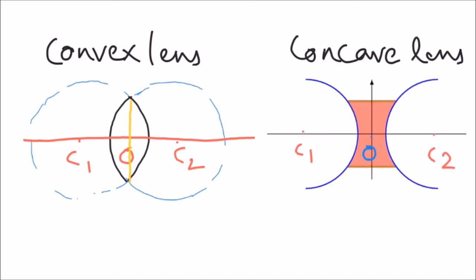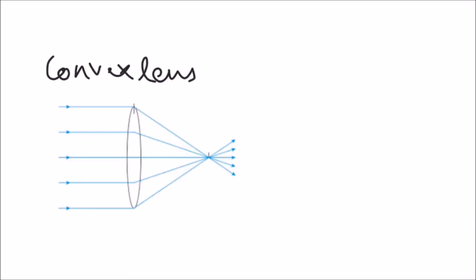On a similar note, for concave lens, C1 is the center of curvature, C2 is the other center of curvature, and O is the optical center.